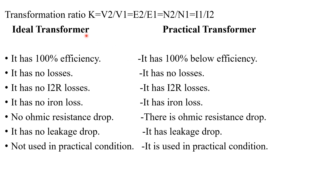Based on this concept, we can define the transformation ratio: a = V2 divided by V1, which is equal to E2 divided by E1, which is equal to N2 by N1, which is equal to I1 by I2. Here, V2 is the voltage across the secondary winding, V1 is the voltage applied across the primary winding. E2 is the induced voltage across the secondary side — in an ideal transformer V2 and E2 are the same. E1 is the EMF induced in the primary winding, N2 is the number of turns in the secondary side, N1 is the number of turns in the primary winding, I1 is the current through the primary winding, and I2 is the current through the secondary side.